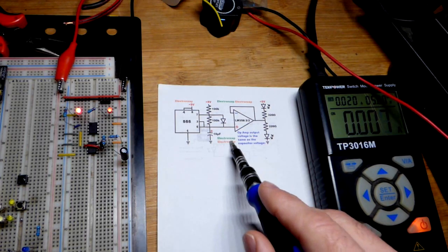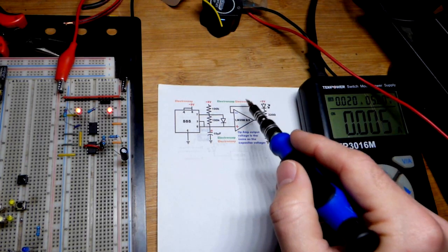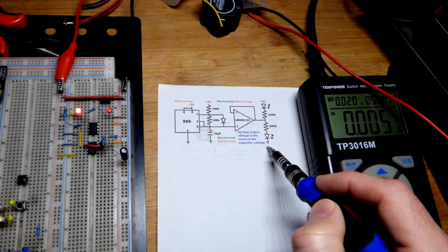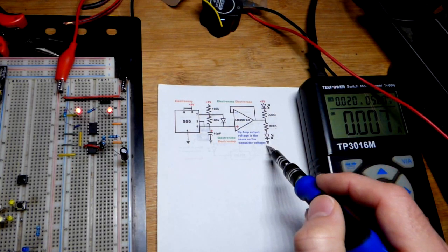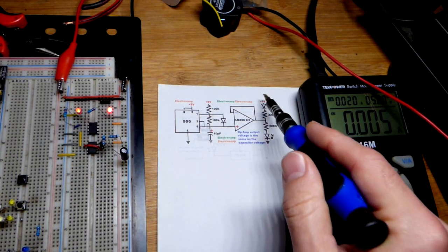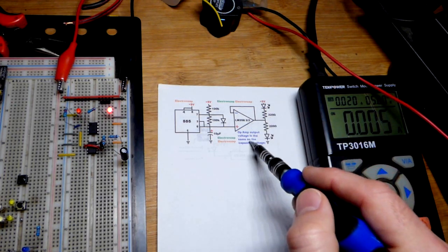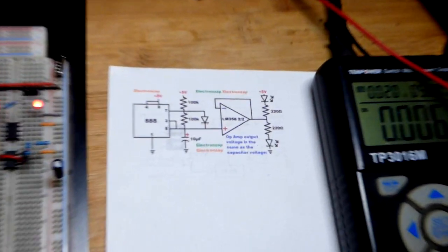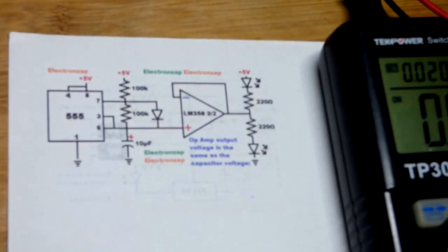Now we're zooming back a bit for those watching the short. As the voltage rises from the op amp output, that LED gets brighter and this one gets dimmer. Then as the voltage goes down, this LED gets brighter while that one gets dimmer. We'll zoom in and take a better look.